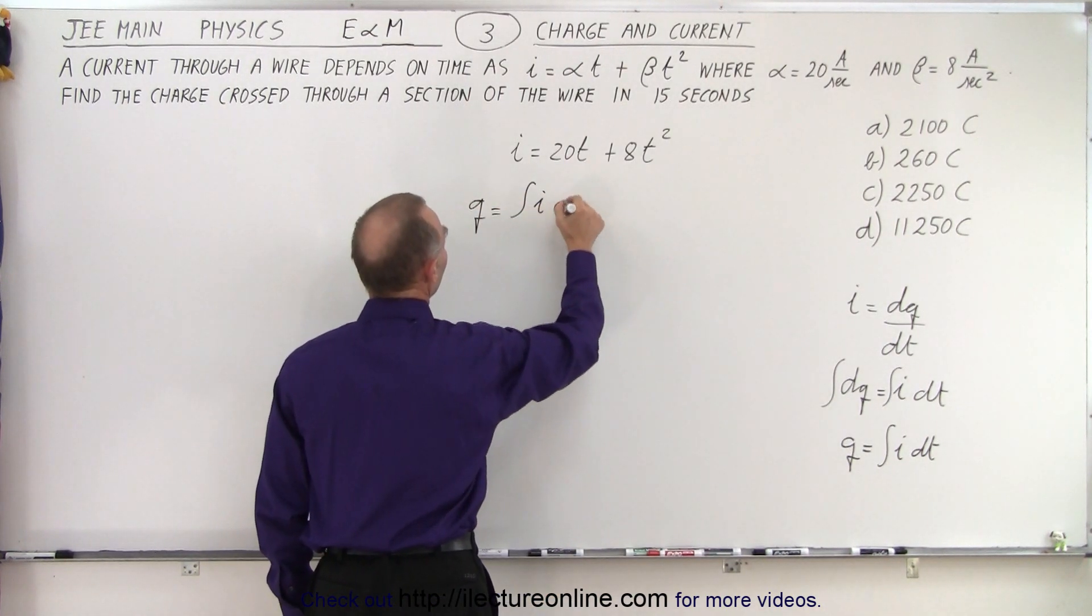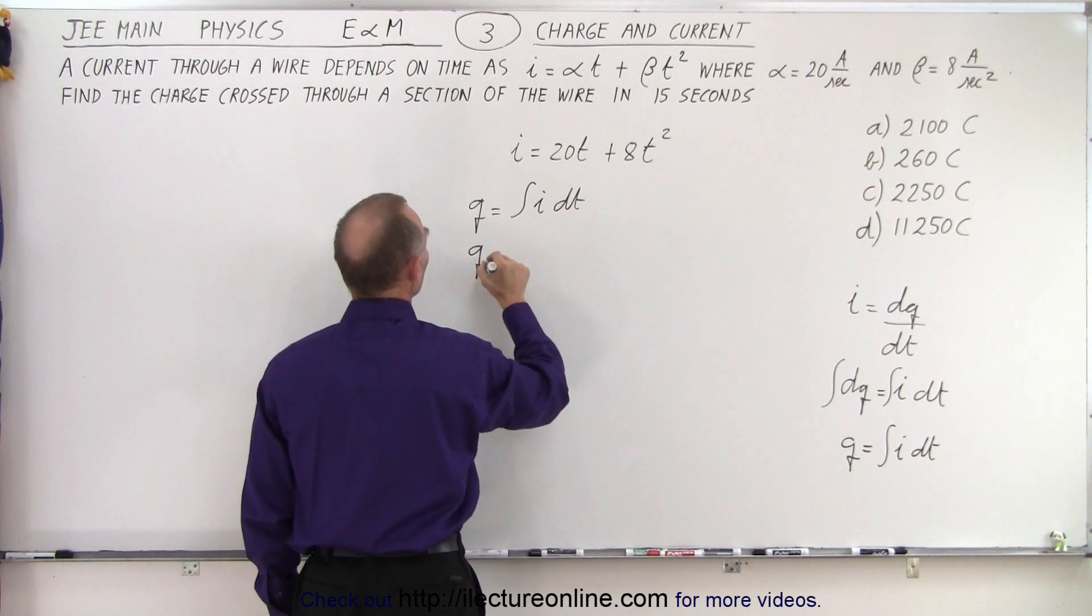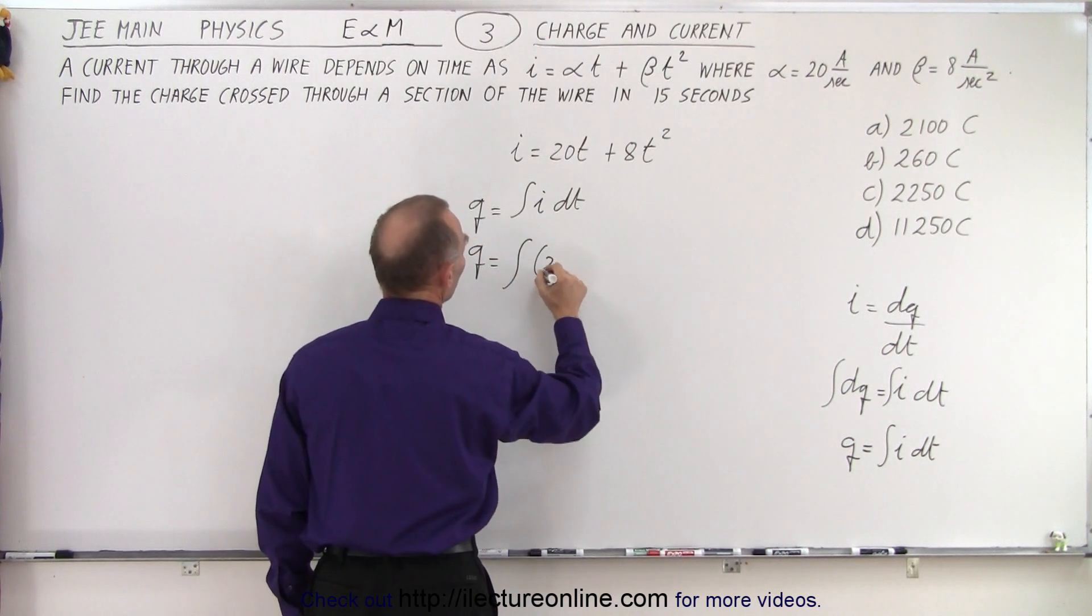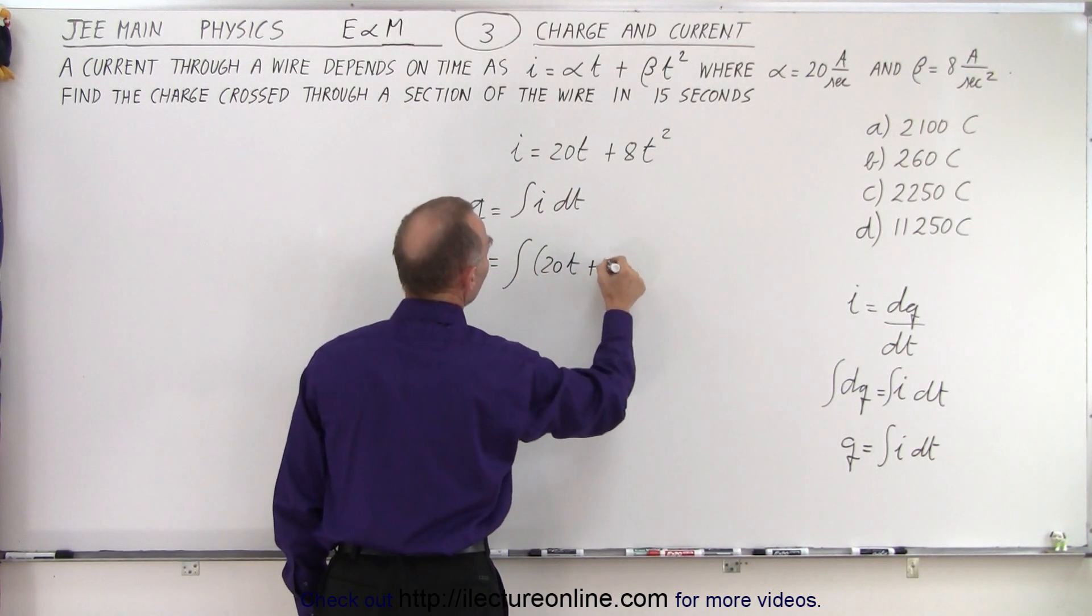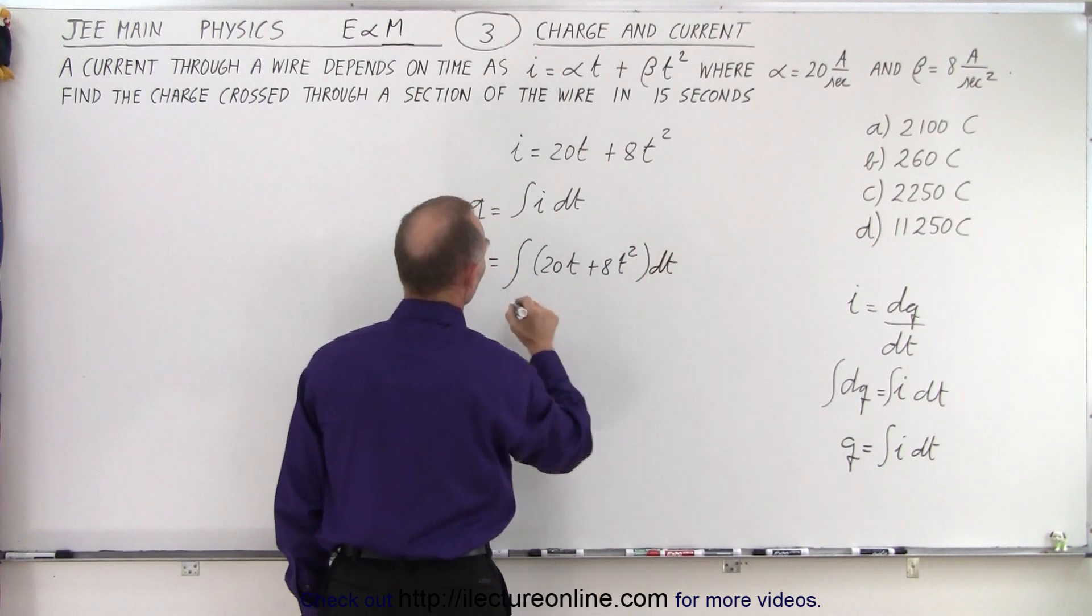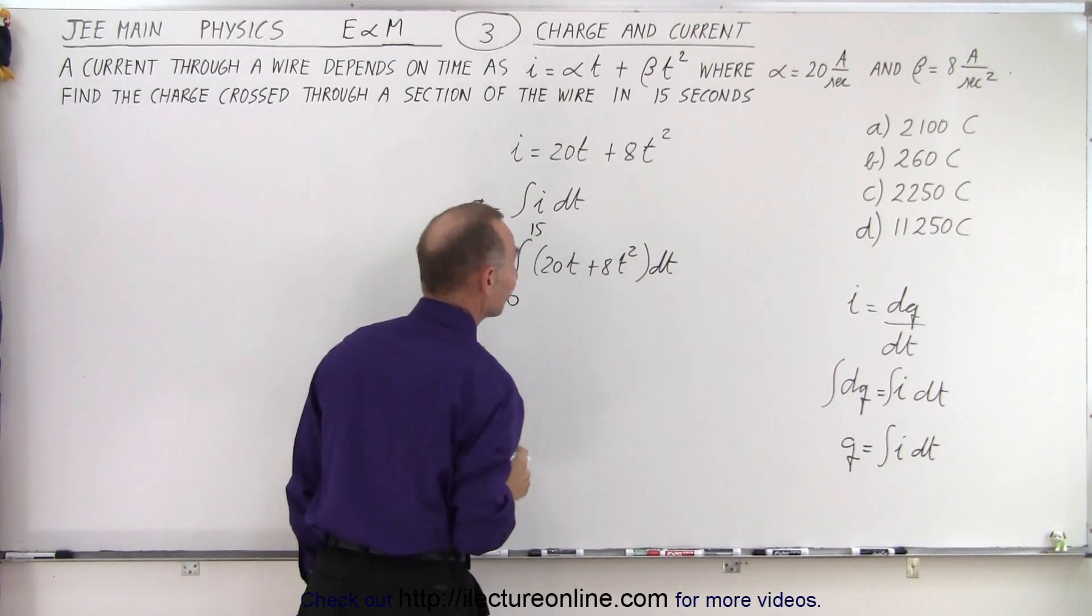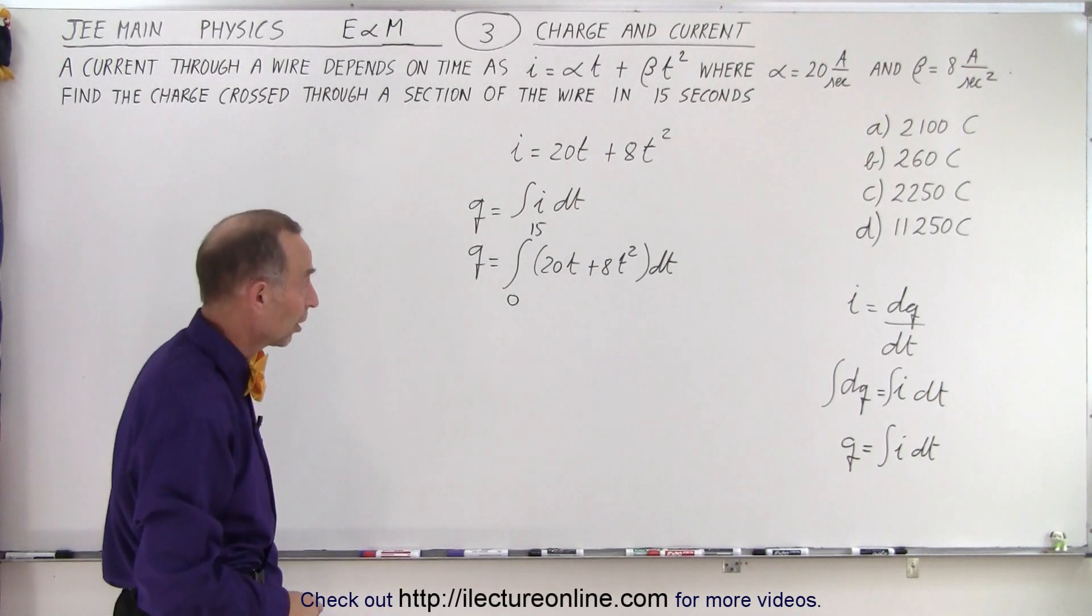If we use the same concept, we can say that q is equal to the integral of i times dt, or q is equal to the integral of 20t plus 8t squared times dt from 0 to 15 seconds. That's how we find the total charge.